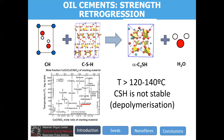The context of this study was the so-called strain retrogression phenomenon, by which CSH gel is transformed into C2S when the temperature is higher than 120 degrees Celsius. This process is well known within the oil cement industry. What is important here is that you are jumping from CSH gel, which contains dimers and pentamers, to the final product C2S, which is composed only of monomers — so there is a depolymerization process.